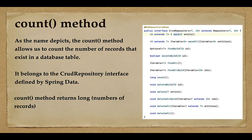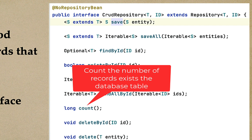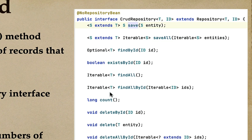Welcome back. In this lecture we'll see how to count the number of records that exist in a database table using the count method. The count method is from the CrudRepository interface and returns a Long type. Whenever you have a requirement to count the number of records in a database table, you can use the count method.